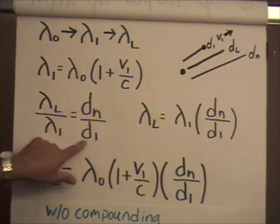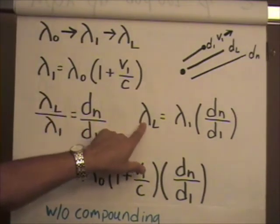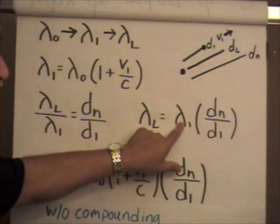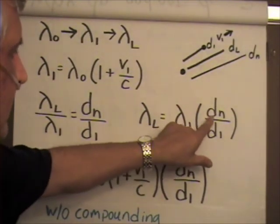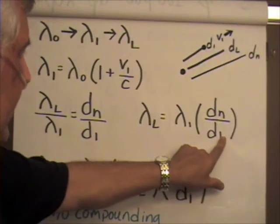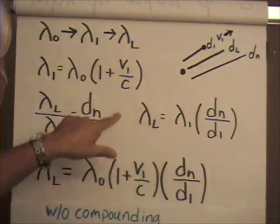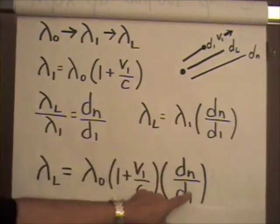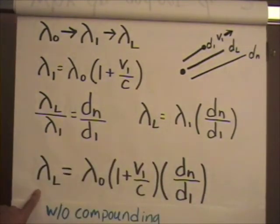In any event, this leads us to the final wavelength equals wavelength one times dn over d1. Now we simply substitute this in for wavelength one, which gives us the final equation.